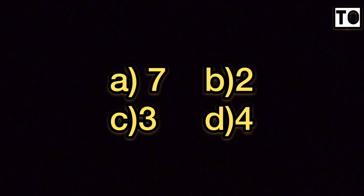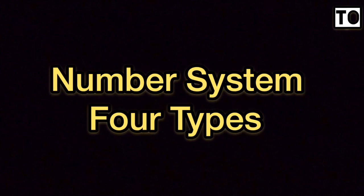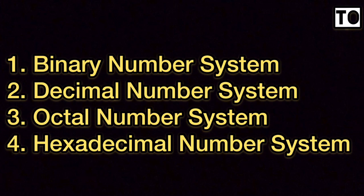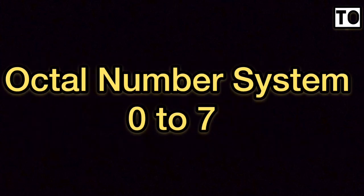Why do we approach it this way? There are 4 types of number systems: binary, decimal, hexadecimal, and octal. We will look at the ranges of these 4 types.